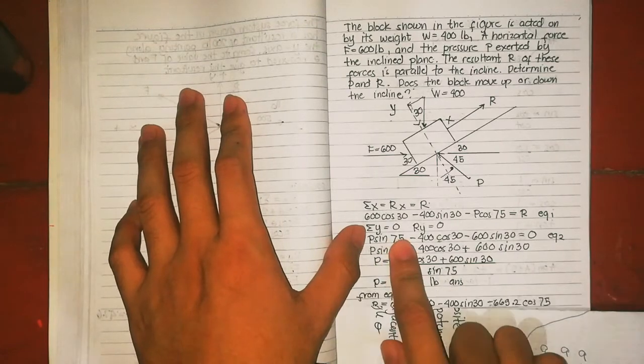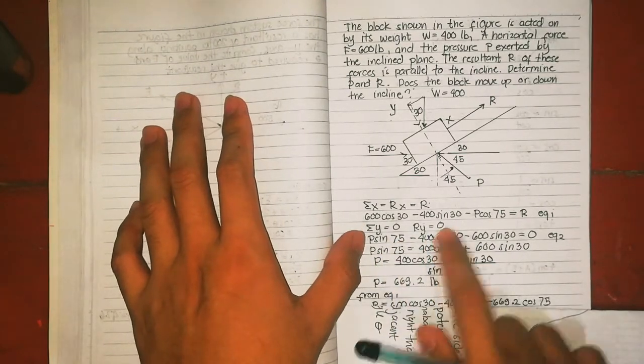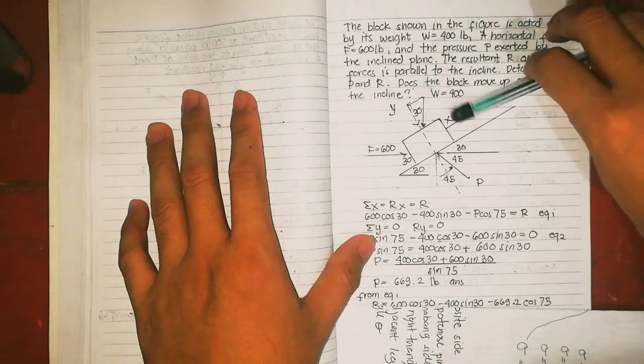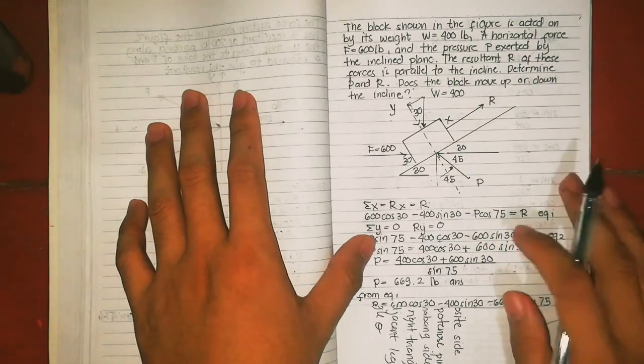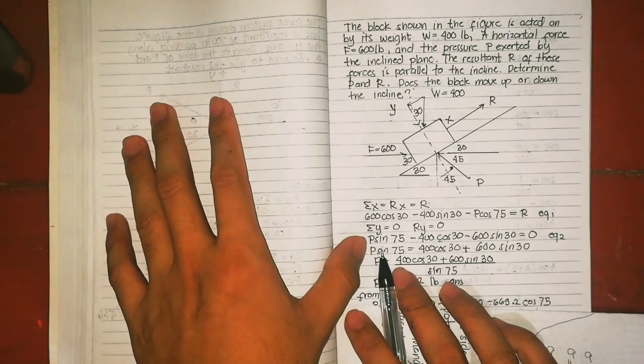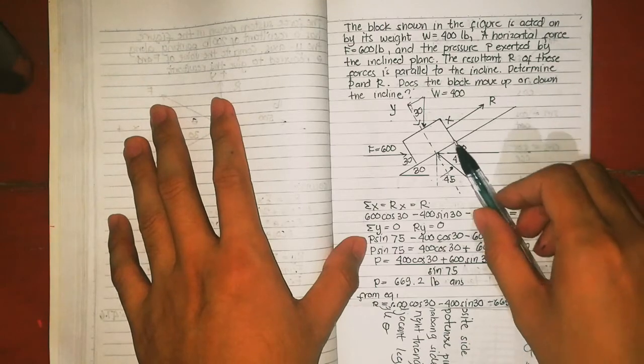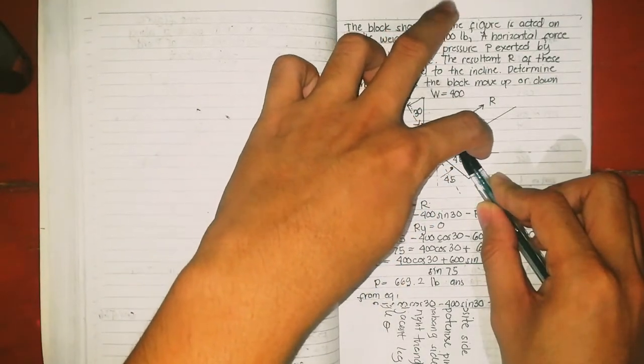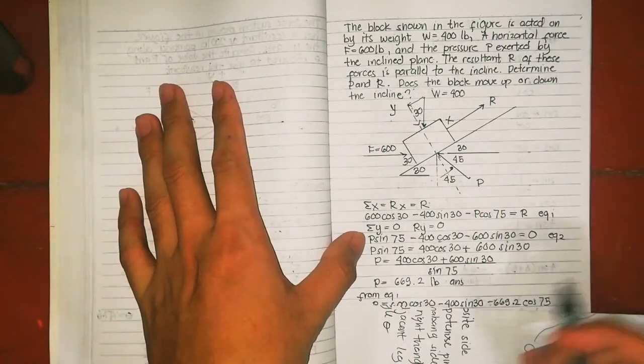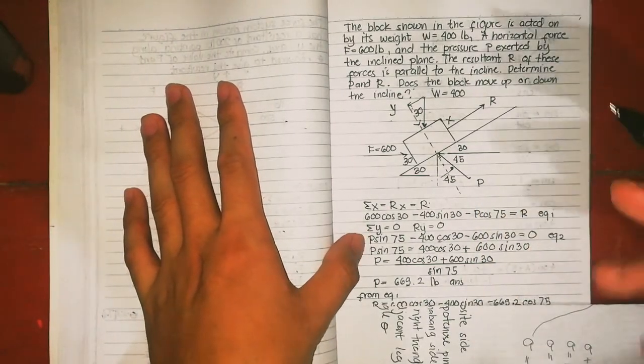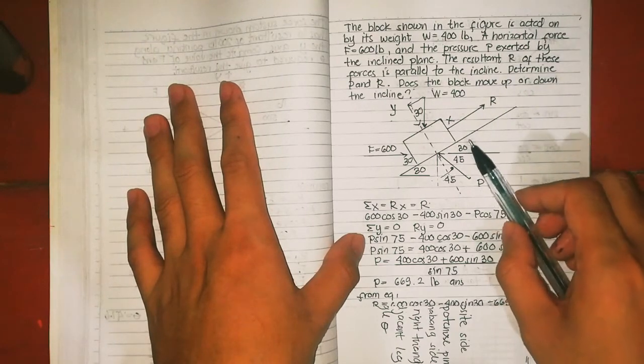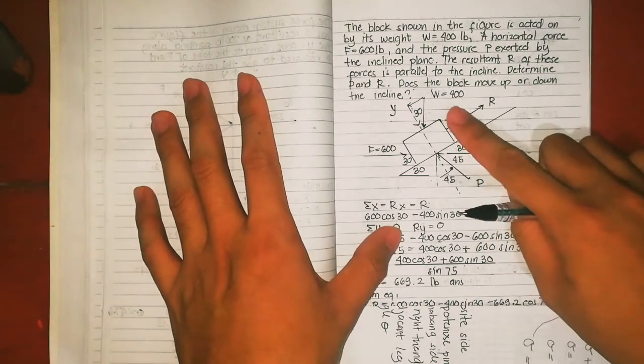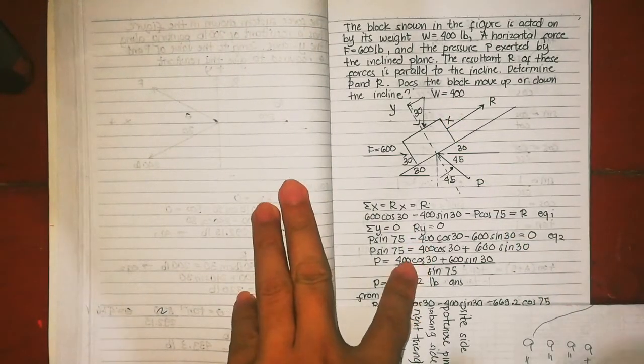For equation 2, summation of Y equals 0, Ry equals 0, because the resultant is going to X only. The resultant is along the X-axis, so Y is 0. Summation of Y.